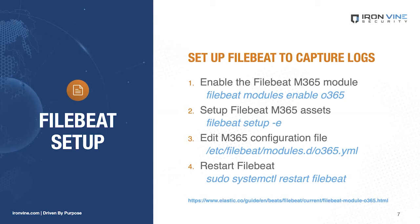Now in your favorite text editor, open the FileBeat O365 configuration file and populate the application or client ID, the directory or tenant ID, the tenant name, and client secret values from the app registered in the previous step. On my Linux system, this file is located at `/etc/filebeat/modules.d/o365.yml`. Save the file when you're done, then restart FileBeat to enable the new module — on my system, this is `sudo systemctl restart filebeat`.